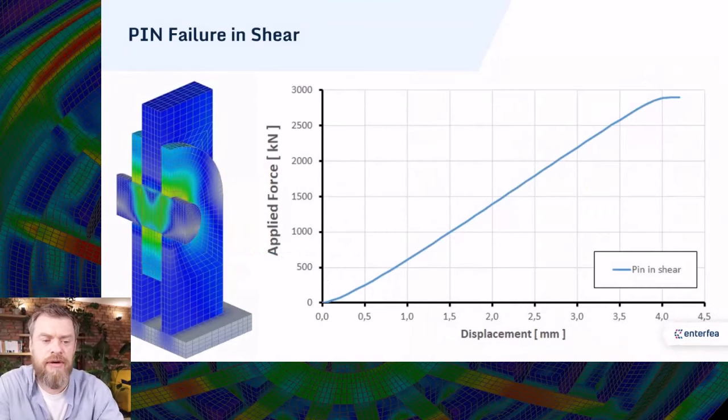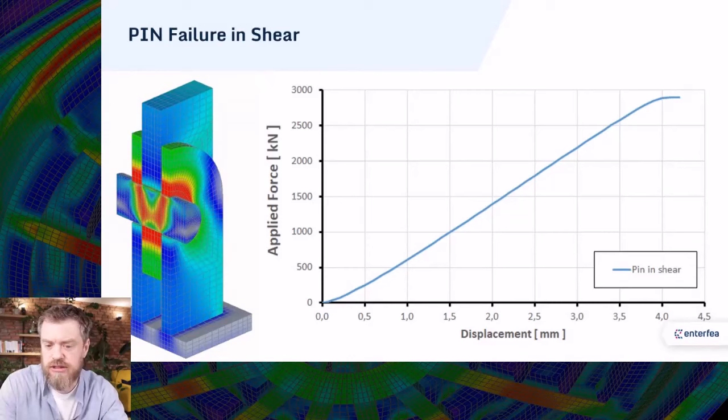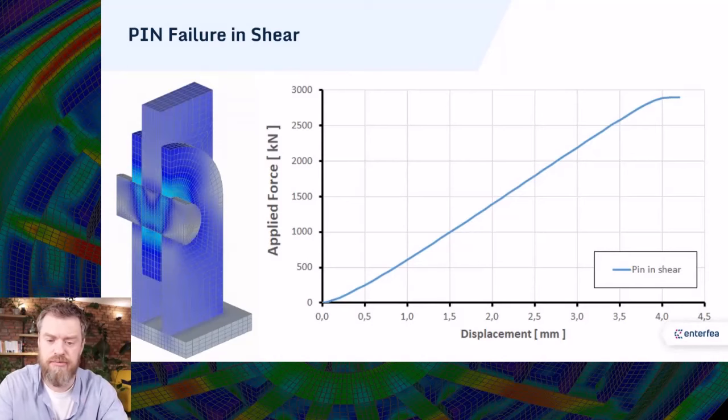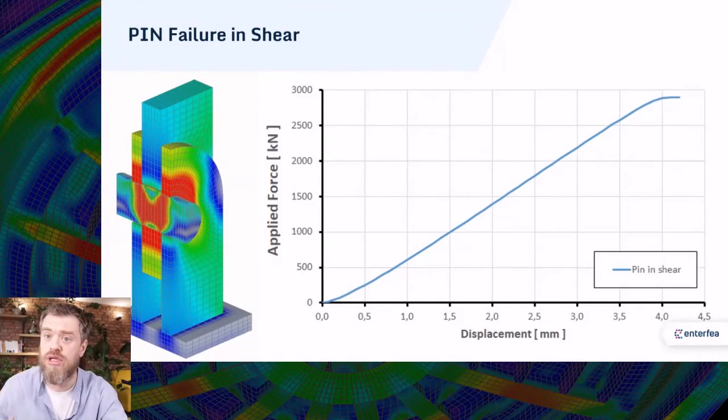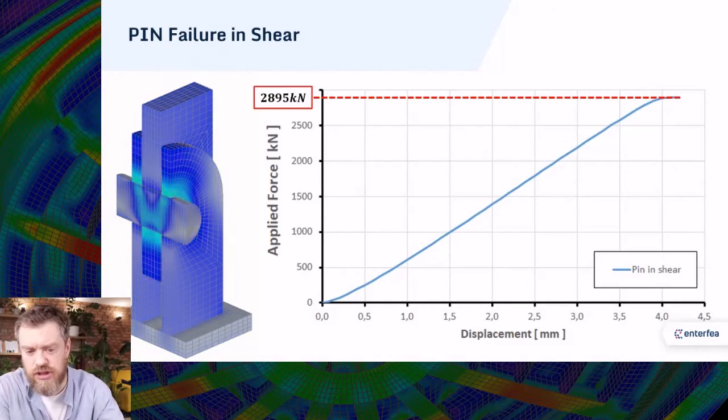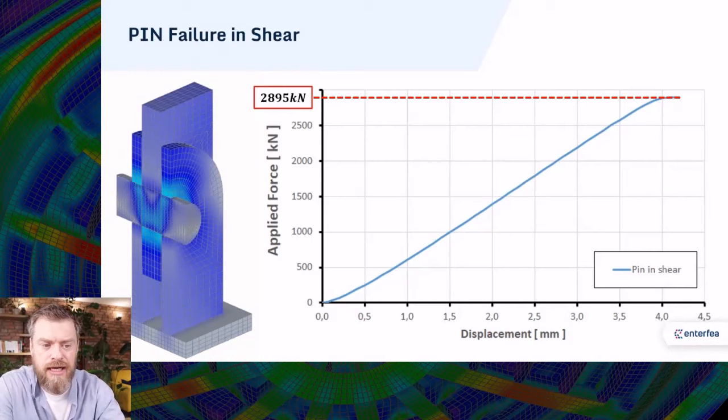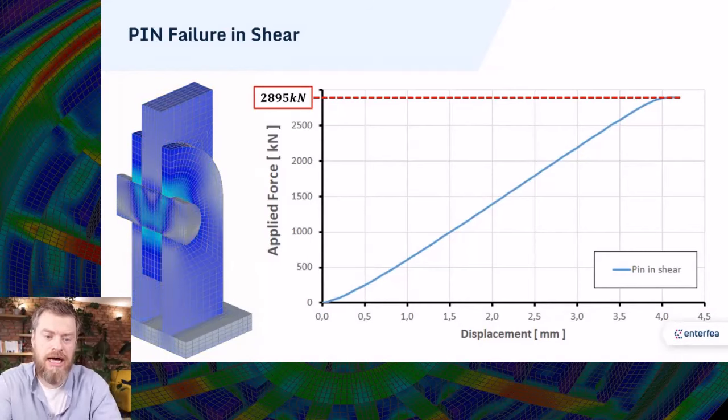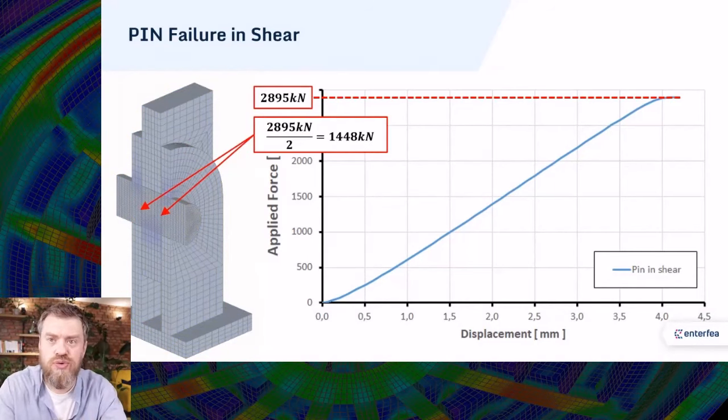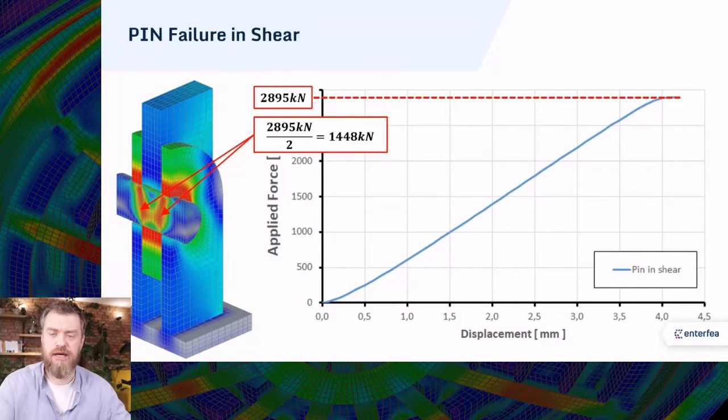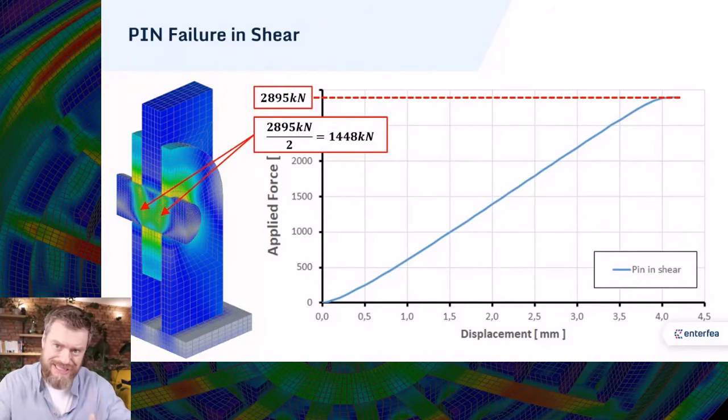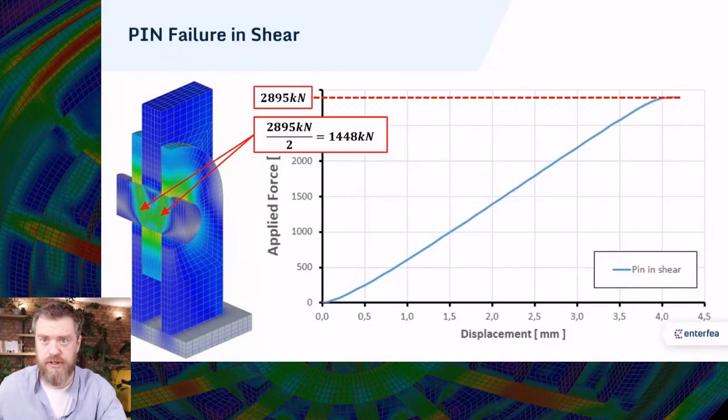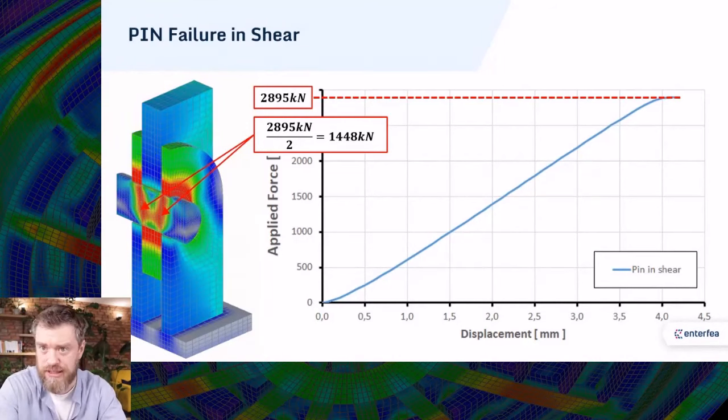As you can see here, this is the equilibrium path. So on the horizontal line, there is a displacement shown in the connection, and on the vertical line, the applied force. The force is for the total connection. This means that, as you can see on the chart, the capacity is around 2,900 kilonewtons. But this is a capacity of entire connection. Our connection, in this case, has two shear planes. Simply put, we have to shear our pin in two places to cause failure. This means that a single shear plane of the pin has half of the capacity of our model.